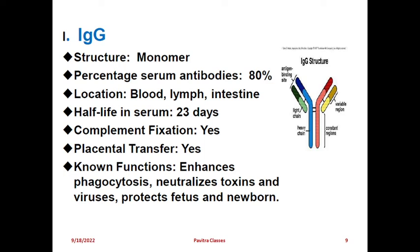IgG - immunoglobulin G - has a monomer structure. It accounts for 80% of serum antibodies, making it the most abundant. Its location includes blood, lymph, and intestine. Half-life in serum is 23 days. Complement fixation is yes, and placental transfer is yes - it can transfer through the placental barrier. Its functions include enhancing phagocytosis, neutralizing toxins and viruses, and protecting the fetus and newborn in pregnant women.